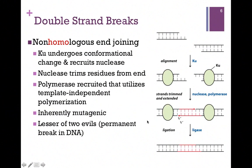It might seem odd that this would be our primary way of repairing breaks, but as we'll see with homologous end joining, this occurs because for most genes we have only one copy — we don't have a homologous gene. So we have to repair it this way. It is inherently mutagenic, but it's the lesser of two evils. If there's a permanent break in the DNA, we can't replicate and the cell will die. In this way, at least the cell survives.